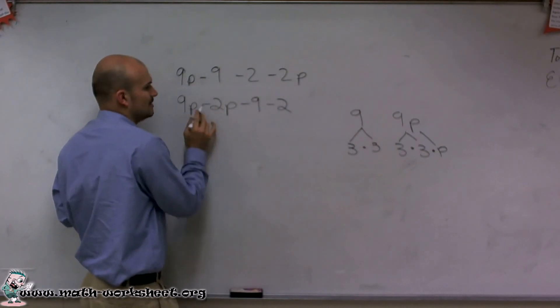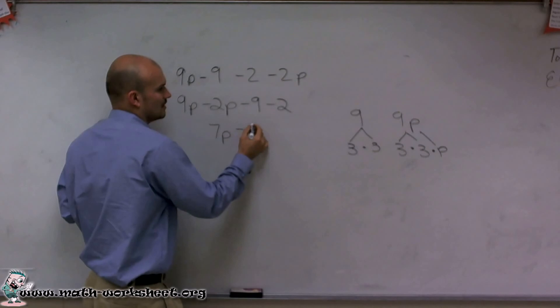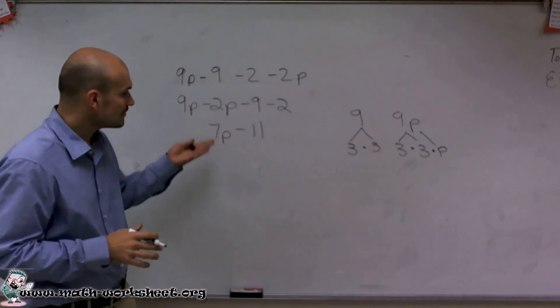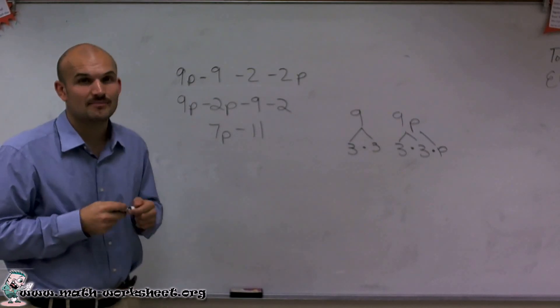Now I have 9p minus 2p is 7p. And negative 9 minus 7 is, or sorry, negative 9 minus 2 is now negative 11. So there we go. My simplified expression is going to be 7p minus 11.